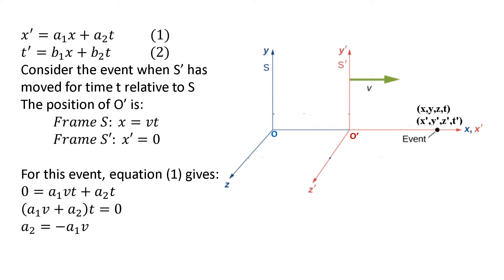Consider the event when S prime has moved for time t relative to frame S. The position of O prime in frame S is X equals V·t, and in frame S prime it is X prime equals 0, because the position of O prime in frame S prime is always 0. Substituting these values into equation 1, we get 0 equals A1·V·t + A2·t. This equation is valid for any value of t, so A1·V + A2 equals 0, giving us A2 equals minus A1·V.